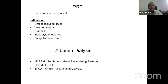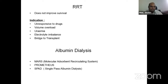Other measures include transjugular intrahepatic portosystemic shunt (TIPS), which can be done in type 1 and type 2 HRS, with type 2 patients benefiting more. Peritoneovenous shunting can rarely be done. Liver transplantation is the final treatment. Renal replacement therapy does not improve renal status but helps support organs. Indications for RRT include unresponsiveness to drugs, volume overload, uremia, electrolyte imbalance, and as a bridge to transplant. Albumin dialysis modalities include molecular adsorbent recirculating system (MARS), Prometheus, and single pass albumin dialysis.